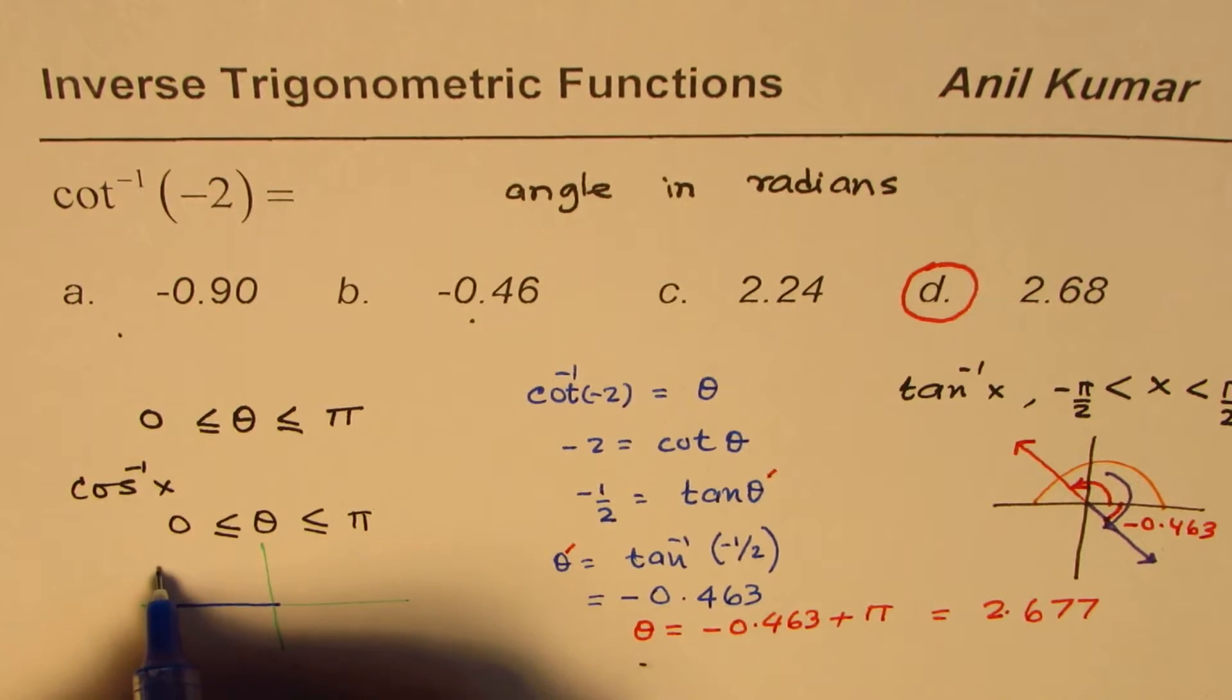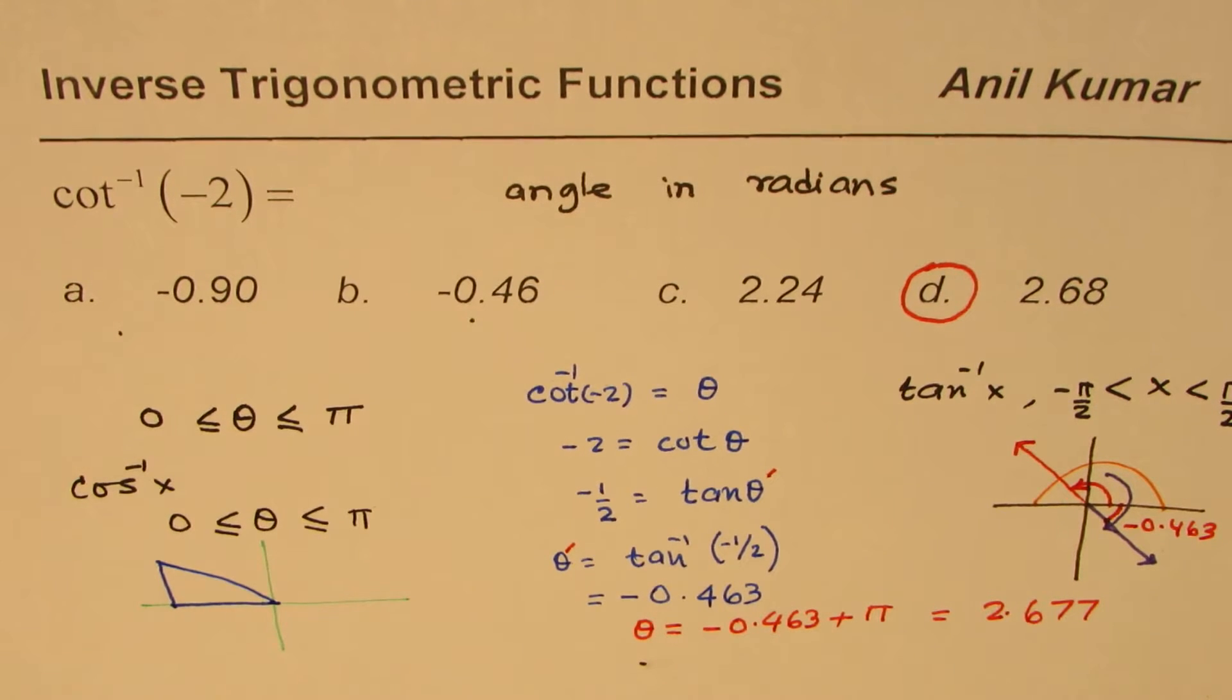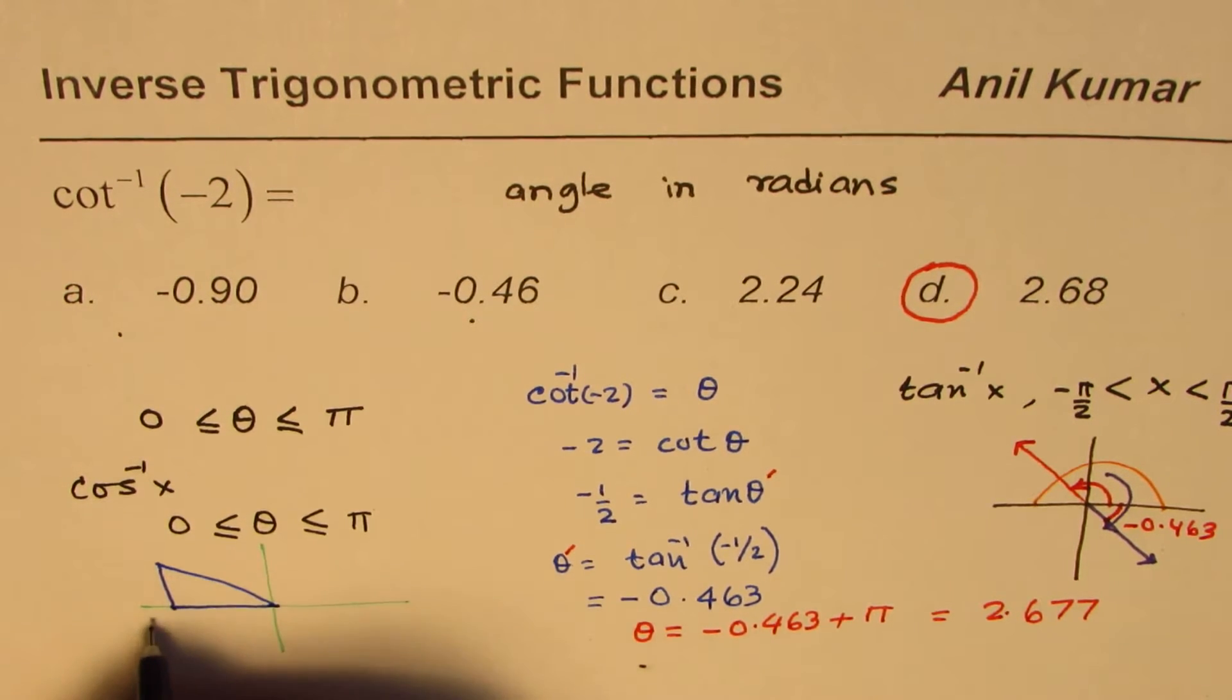So minus two means kind of like this and the opposite side is one. So that is the triangle which is formed. So in this particular triangle, this is like minus two and this is one.